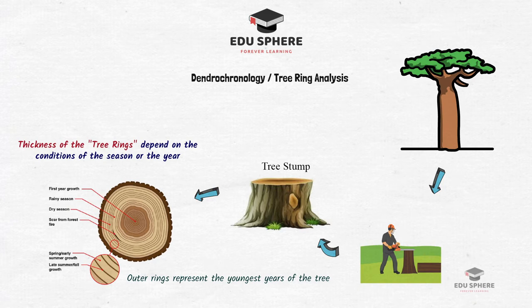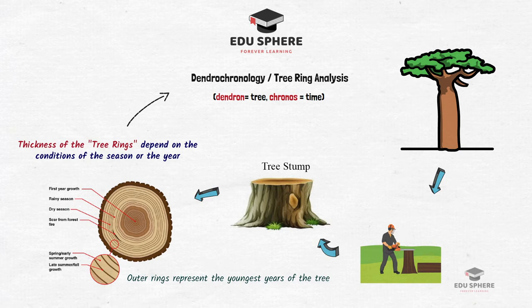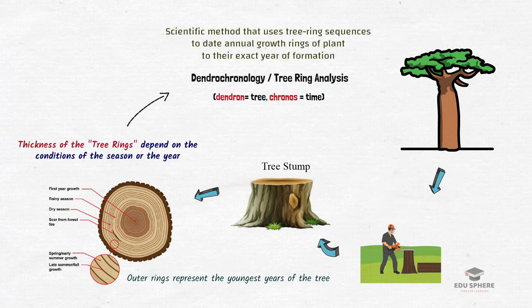The tree rings therefore represent the growth patterns that reflect the condition of the season or the year, and it is these rings on which the entire study of dendrochronology is based. Dendrochronology can be divided into 'Dendron' which means tree and 'Kronos' which means time. So this is a scientific method that uses tree ring sequences to date annual growth rings of plants to their exact year of formation.